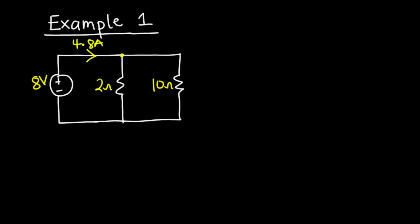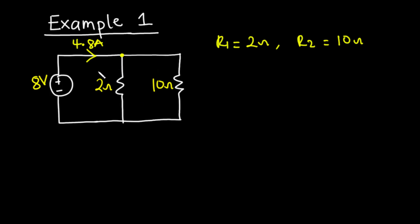For this example, we have an 8-volt voltage source connected across two parallel resistors. The first resistor R1 is 2 ohms and the second resistor R2 is 10 ohms. We have a total current of 4.8 amperes flowing through the circuit, and at node A the current divides so that I1 flows through the 2-ohm resistor and I2 flows through the 10-ohm resistor.